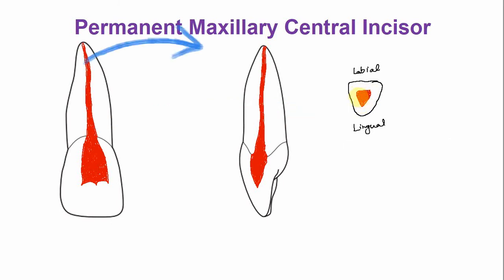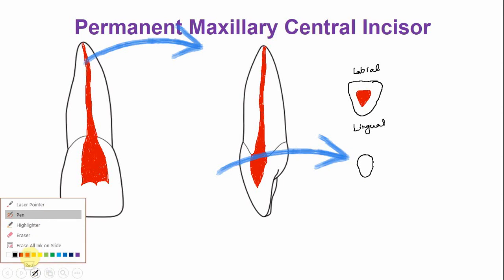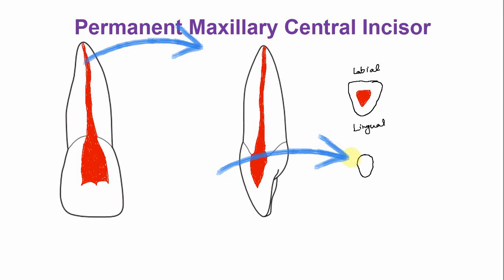In the apical portion — as shown by the arrow — the root canal is round to oval in shape. That is the configuration of the canal in the apical portion of the root. With age, there is a change in the size of the pulp cavity due to deposition of secondary dentine and sometimes tertiary dentine.